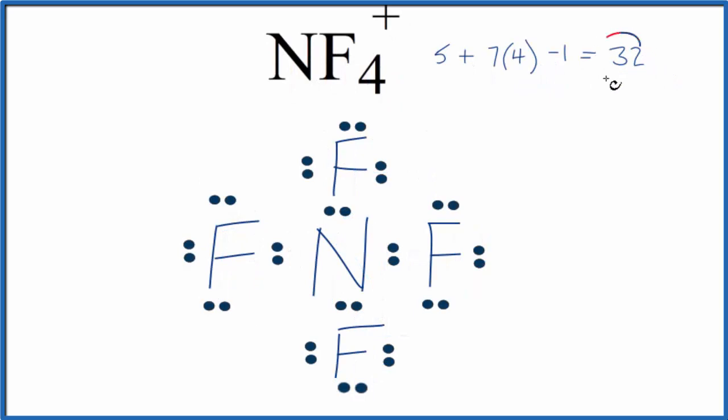At this point, we've used all 32 valence electrons. Each of the fluorine atoms has an octet, 8 valence electrons. And the nitrogen in the center has 8 valence electrons. So this is a good Lewis structure for NF4+.